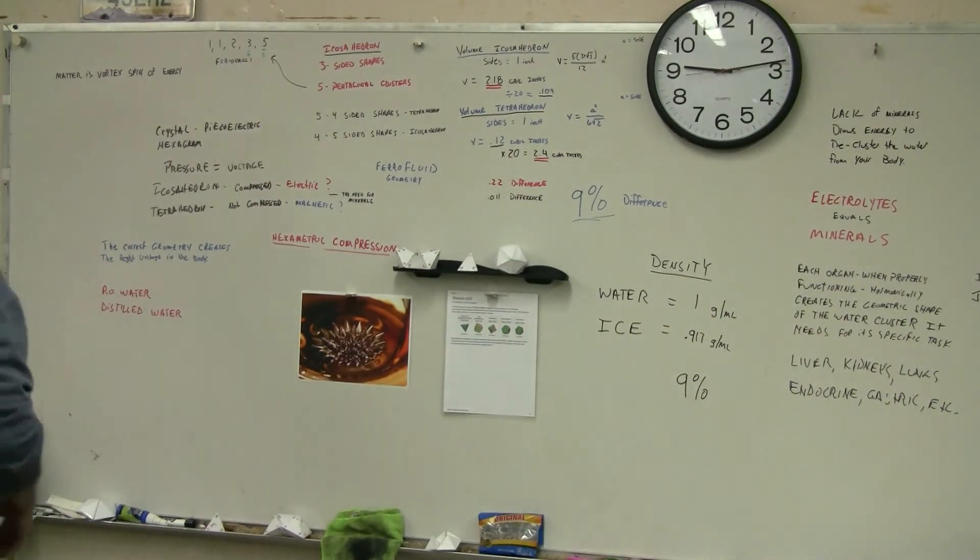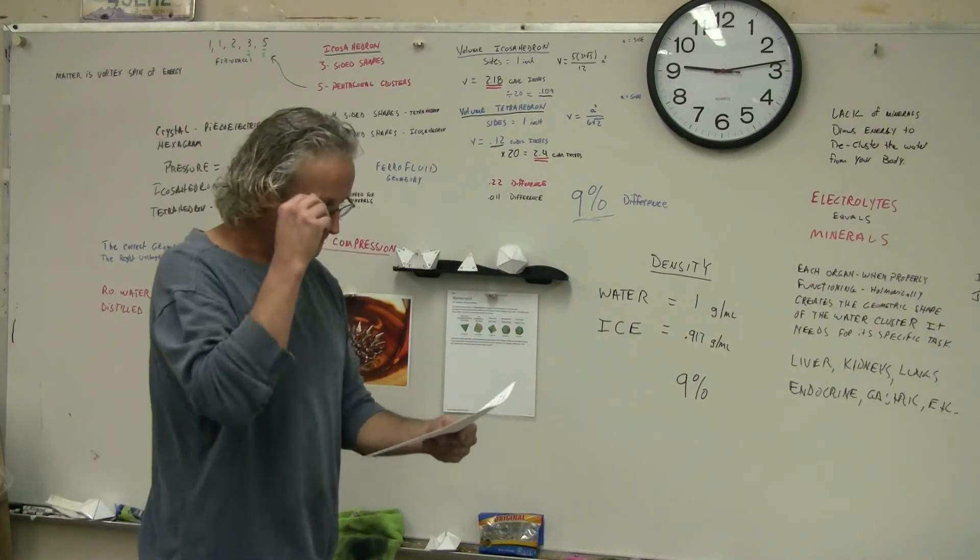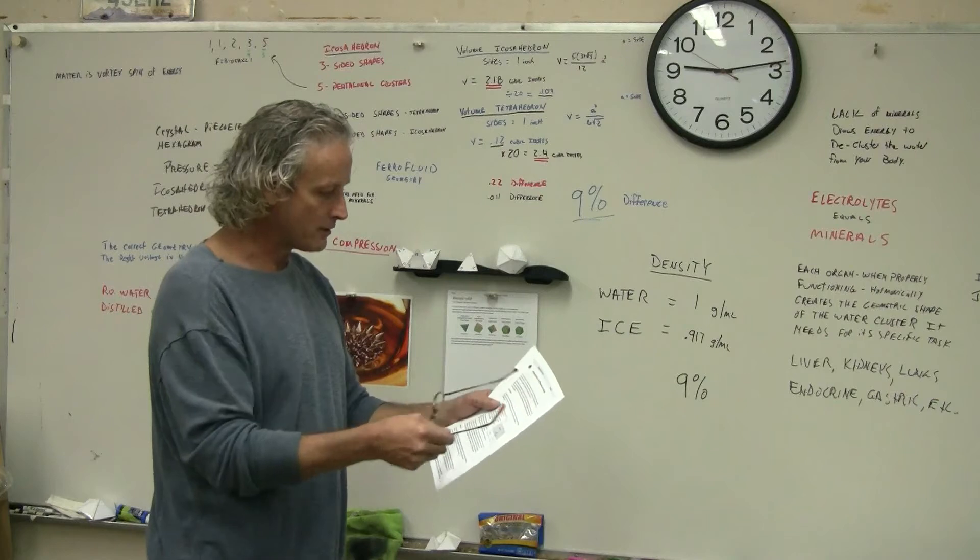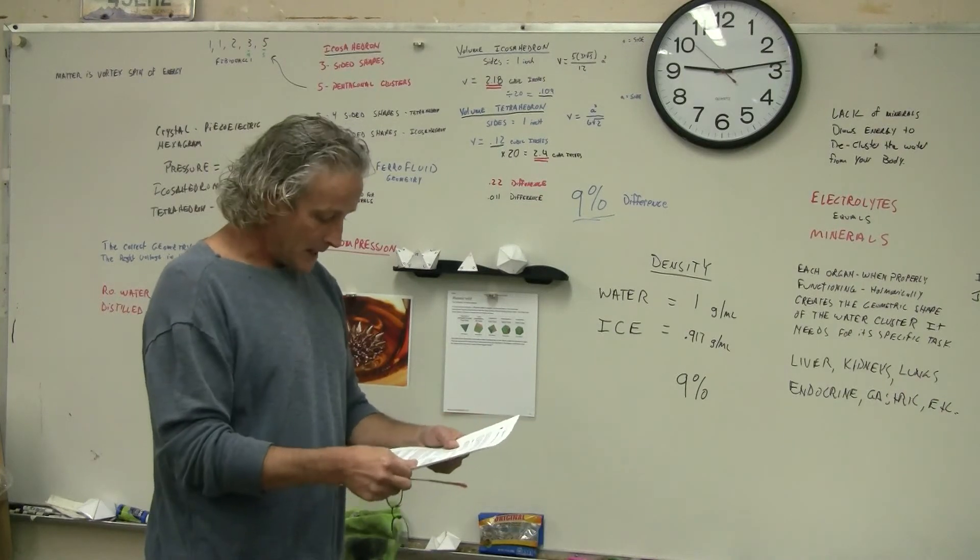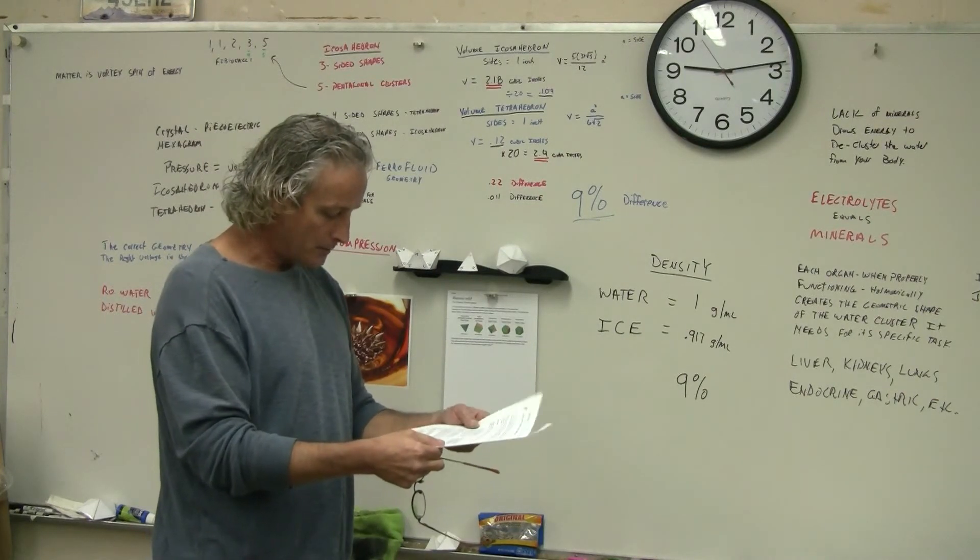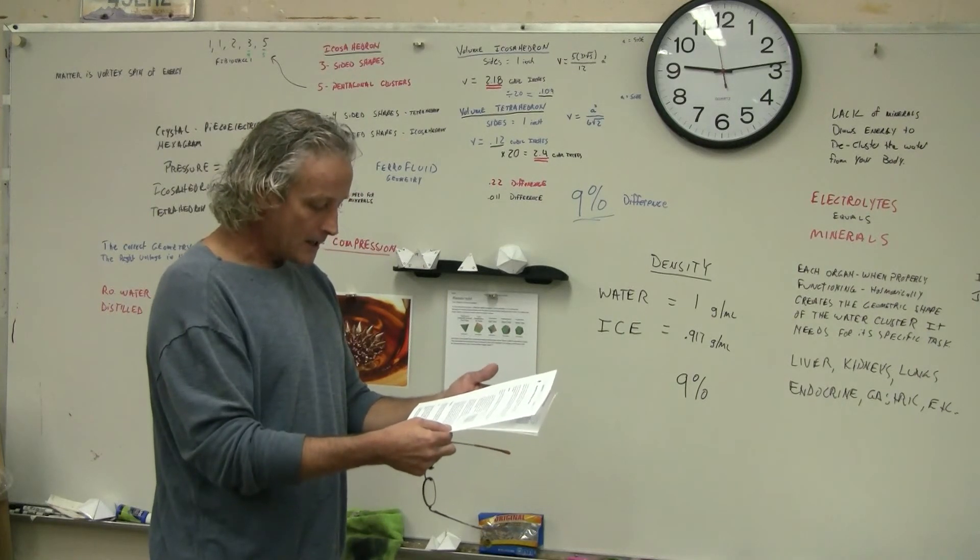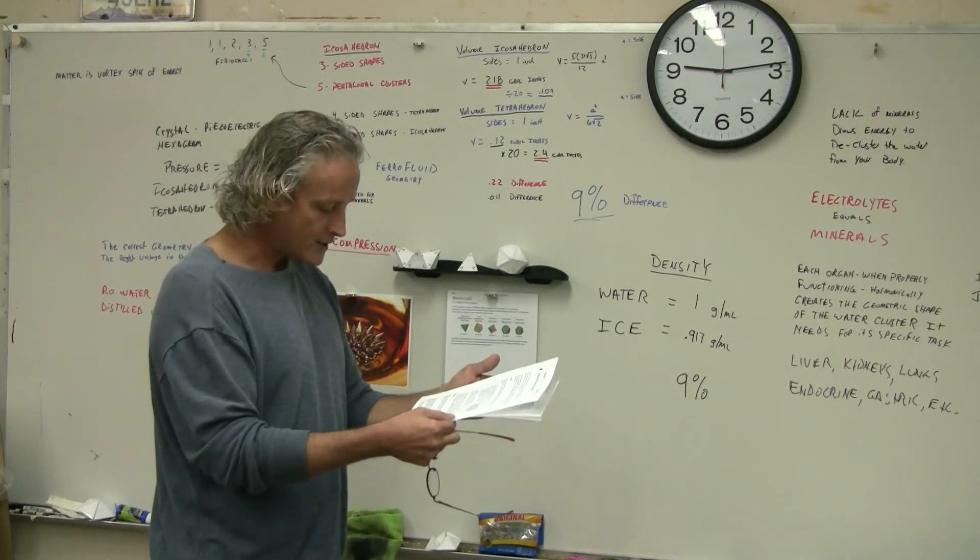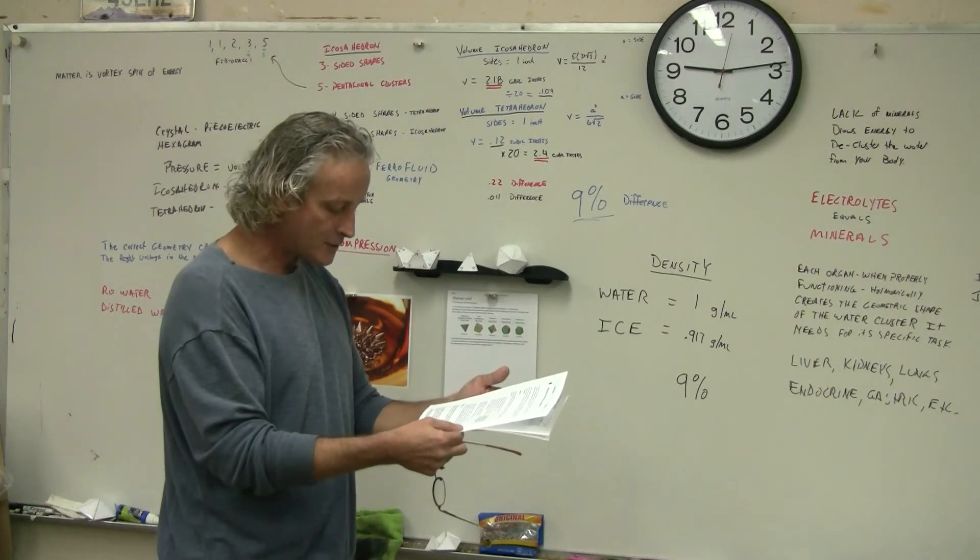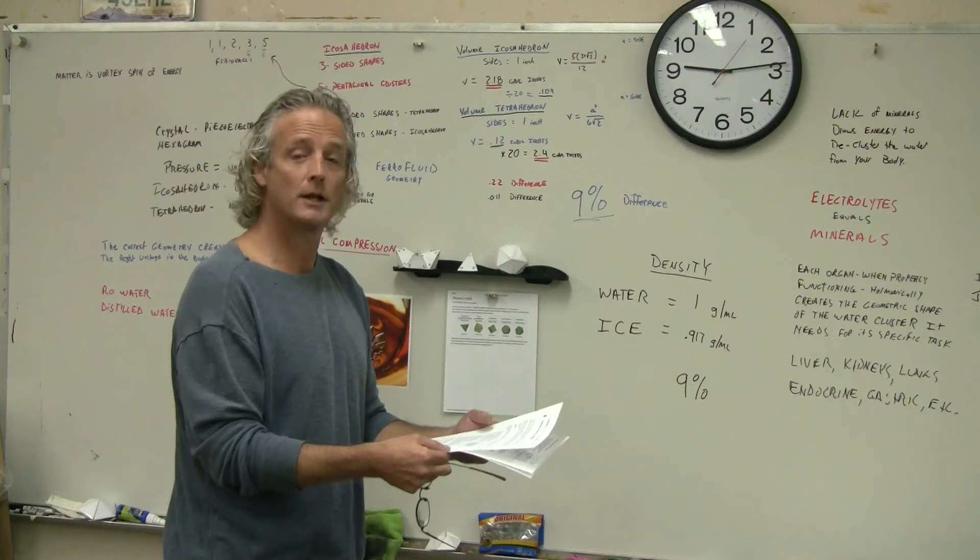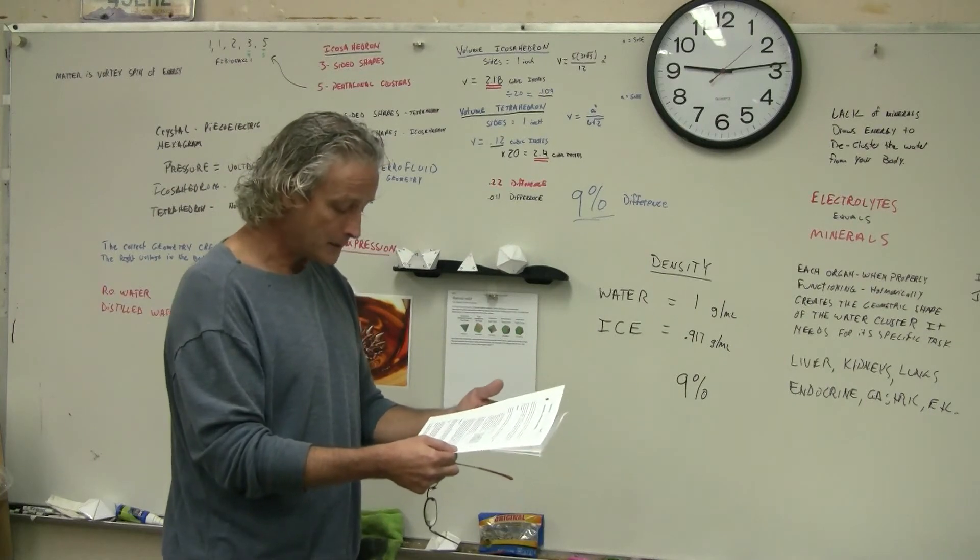In this paper here—and this is going to be in the link—on the absorption of minerals and metals, it says iron is absorbed by villus enterocytes in the proximal duodenum. Efficient absorption requires an acidic environment, and antacids or other conditions such as high pH water, like Fiji water and some others that are even higher...